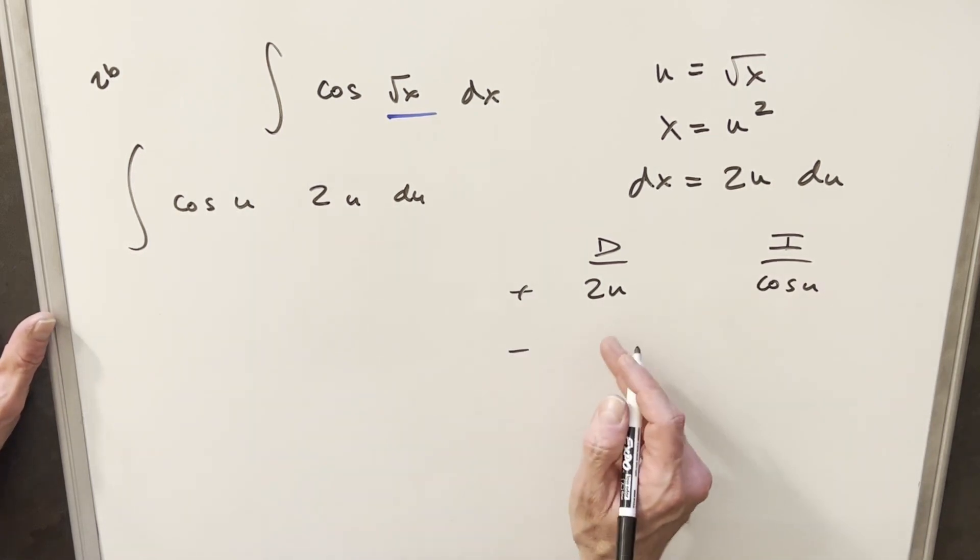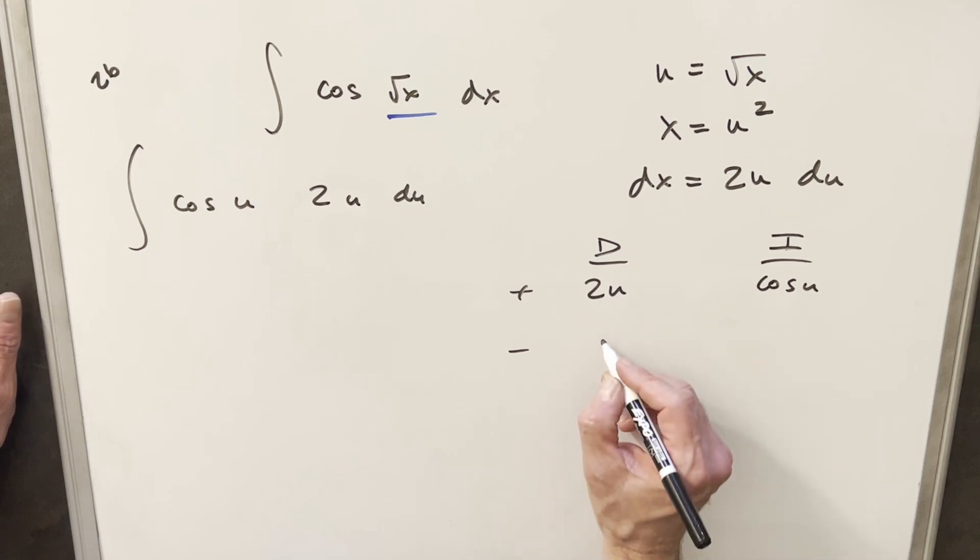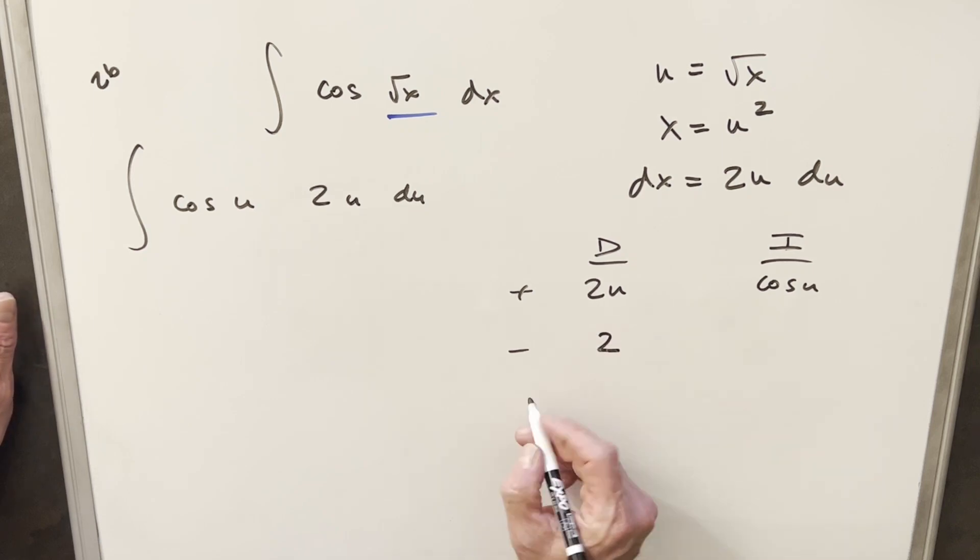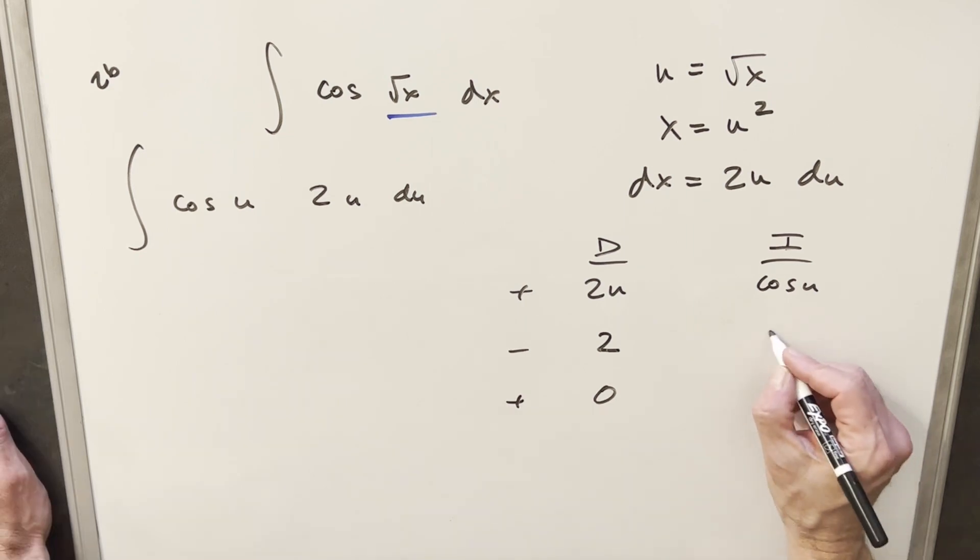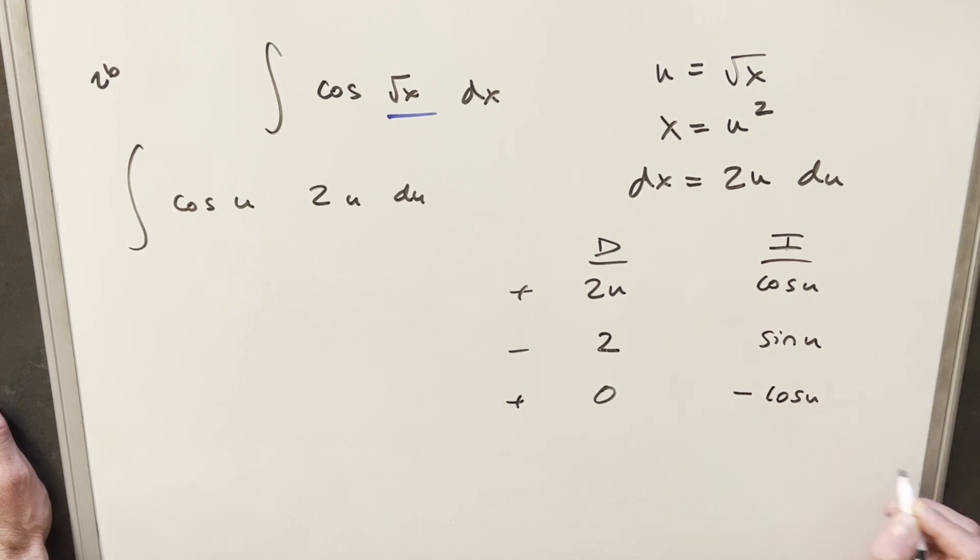We'll alternate the sign, so we'll differentiate 2u, and we're going to get 2. We differentiate again, and we're going to get zero. Integral here is going to be just sine u. Integral of sine u is going to give me minus cosine u.